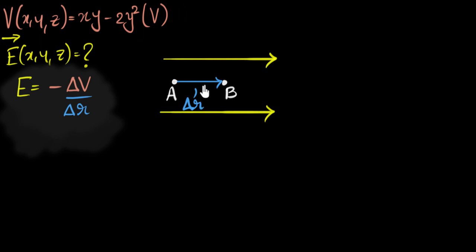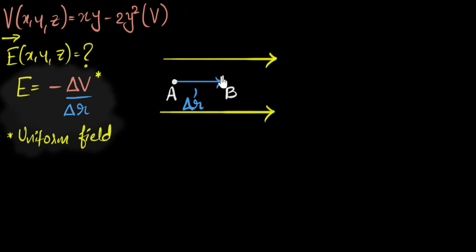But there are a couple of problems if you try to directly use this. First, this will only work for uniform electric fields. Think about it: if you want to step forward and calculate how much the potential has changed and divide by delta R, that electric field value should stay the same everywhere in between. But in our case, the electric field may be changing — it may be a non-uniform electric field.